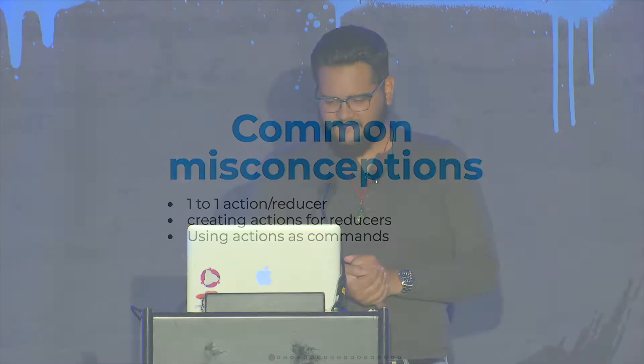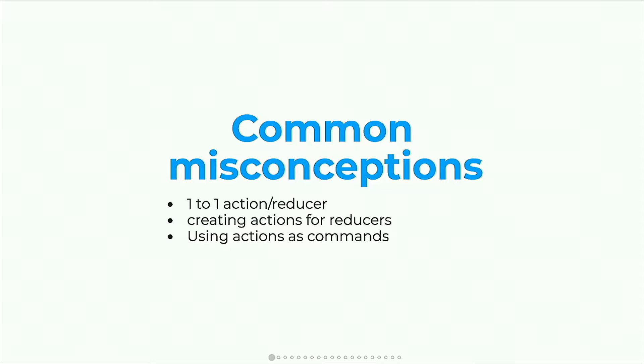The other thing I want to talk about are common misconceptions when it comes to actually writing Redux code. The biggest one, and the one that annoys me the most, is this one-to-one action-reducer thing: you write an action, then you write a reducer or switch statement for that action, and then you put that action somewhere in your app. So if we use the standard ToDoMVC app, you write an action to create a to-do, write a switch statement that adds it to a list, and somewhere in your app you put this action. To me that's completely reversed of how things should be.